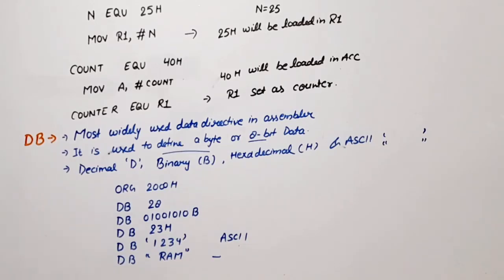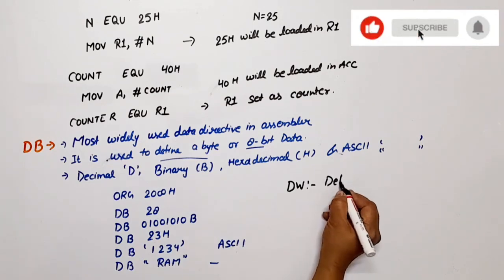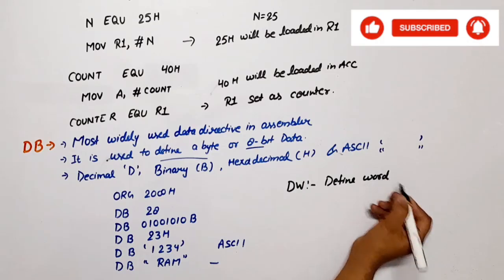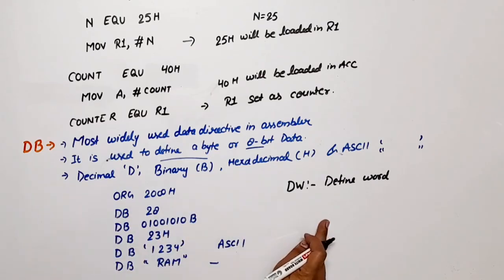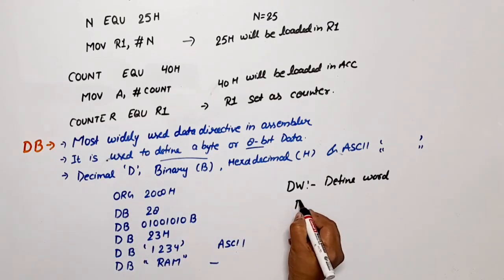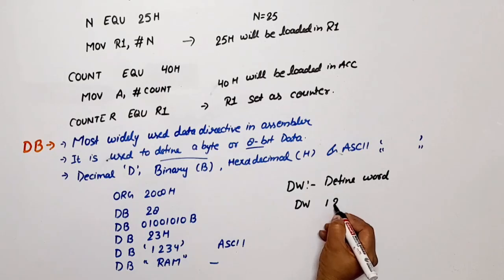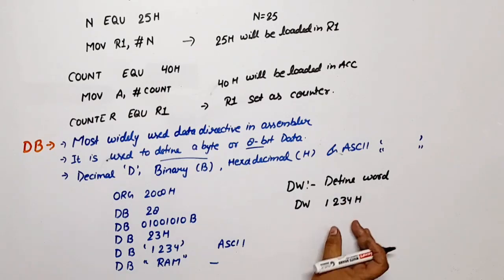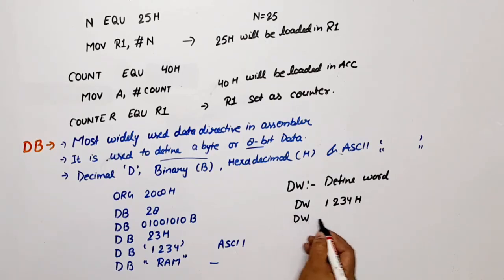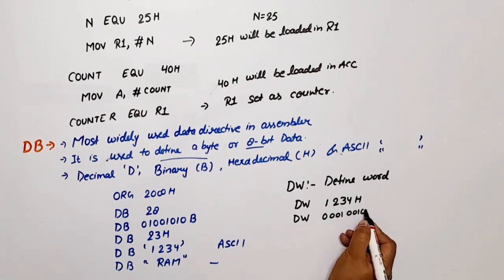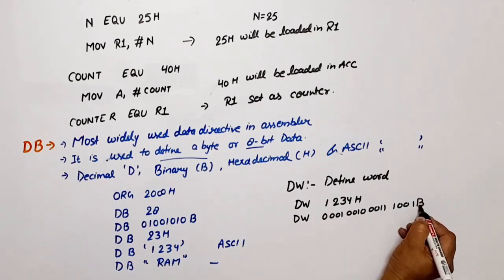Next directive is DW, which means Define Word. This is exactly similar to DB, but the difference is that DB defines 8 bits, while DW defines a word — meaning 16 bits. For example, DW 1234H defines a 4-digit hexadecimal number, which is a 16-bit binary number. If we need to represent it in binary, it would be a 16-bit value. Both directives are the same except DB is 8-bit and DW is 16-bit.